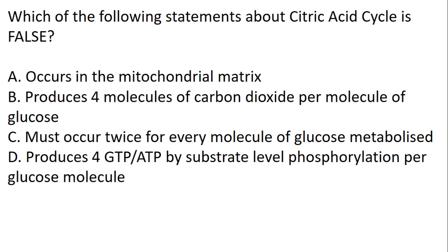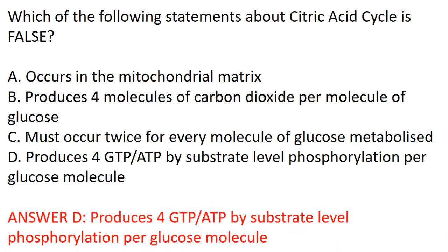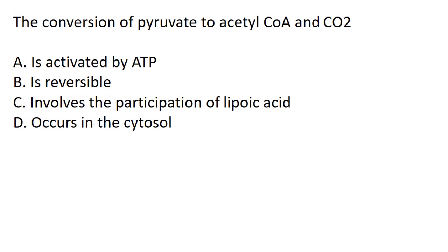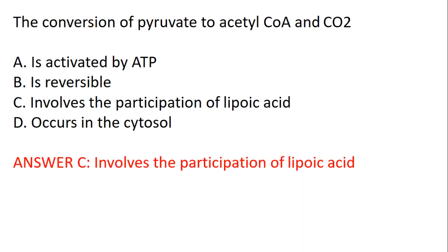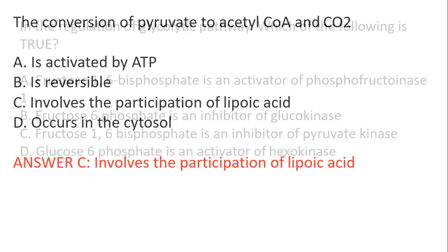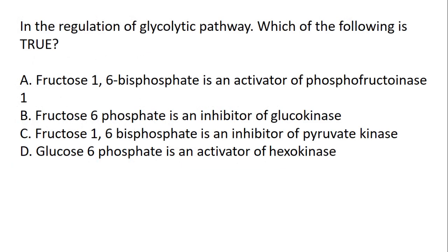Which of the following statements about the citric acid cycle is false? The answer is D: it produces four GTP/ATP by substrate-level phosphorylation per glucose molecule. The conversion of pyruvate to acetyl-CoA and carbon dioxide — the answer is C — involves the participation of lipoic acid.